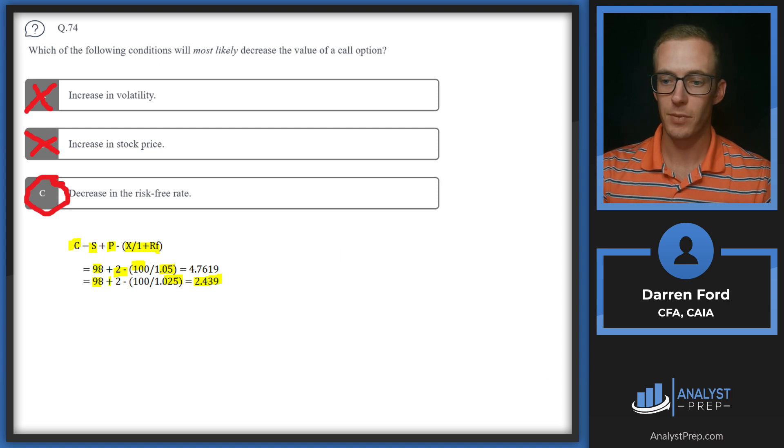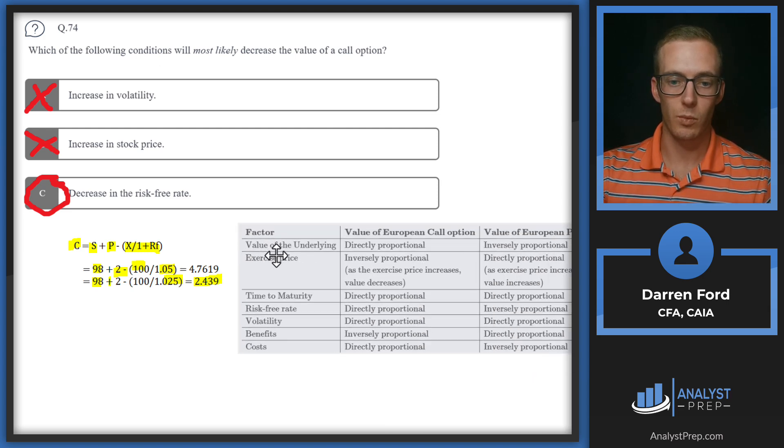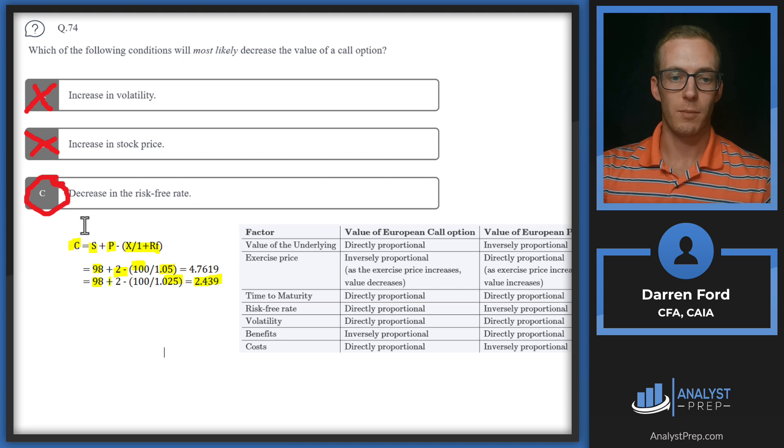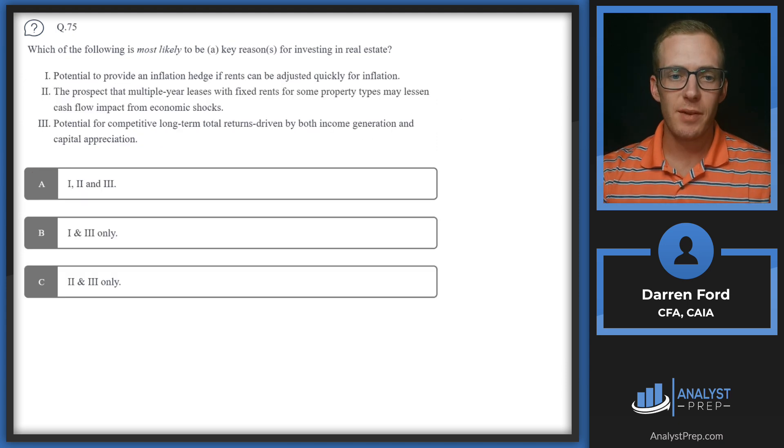This is a helpful quick exercise with simple numbers to show the answer there. This chart from the reading is helpful to take a look back at to help you know what the different factors do to the value of calls and puts. So the long-winded way to get to answer C: decrease in the risk-free rate.